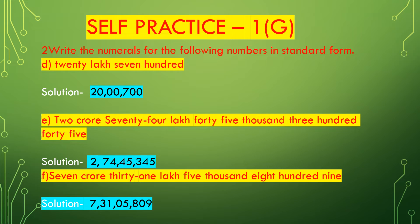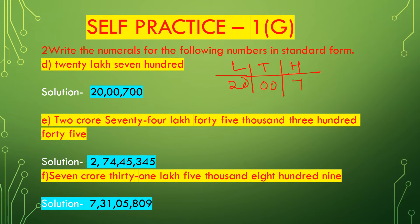Part (d): Twenty lakh seven hundred. In the lakh place the number is 20. In the thousand place there are no digits, so we place 00. In the hundred place it is 700 — seven zero zero. So the number in standard form is 20,00,700 — twenty lakh seven hundred.